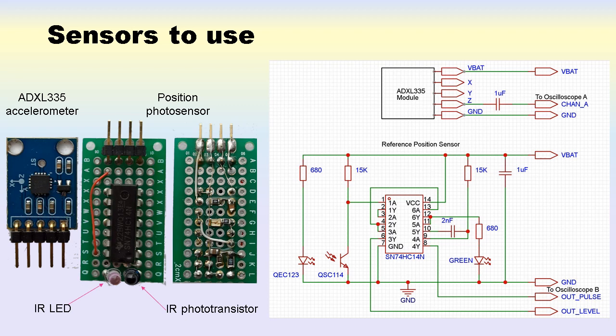We also need to know the phase of this signal relative to some convenient reference point linked to rotation of the wheel. We will use a reflective photosensor, consisting of a light source, infrared LED,